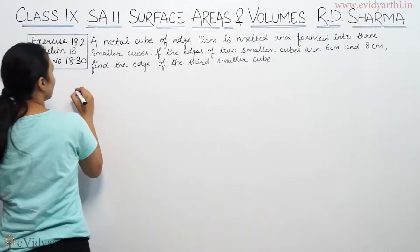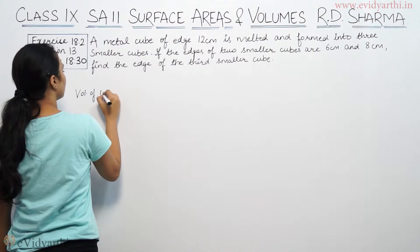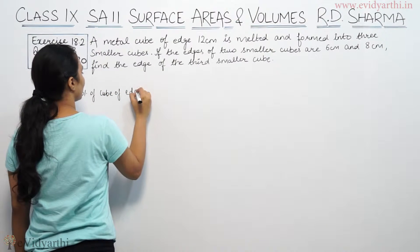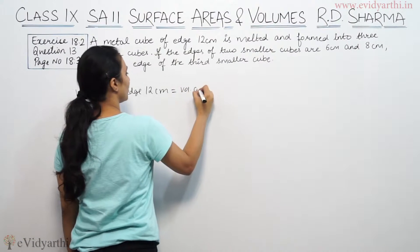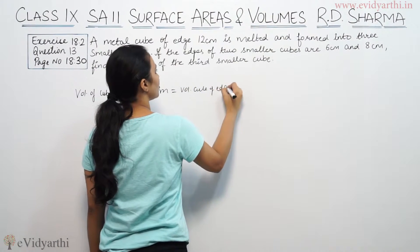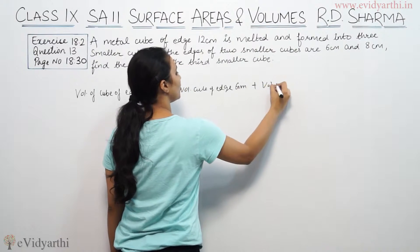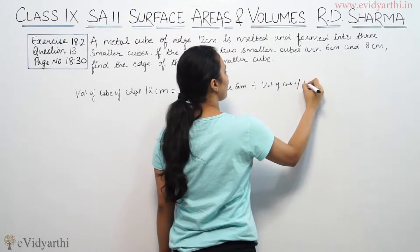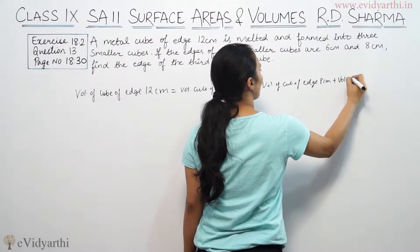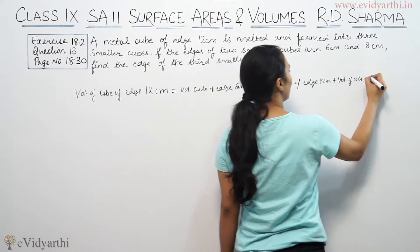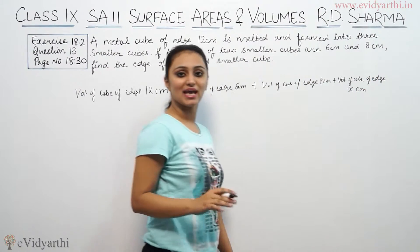So volume of cube of edge 12 cm equals volume of cube of edge 6 cm, plus volume of cube of edge 8 cm, plus volume of cube of edge x cm. This is x cm.